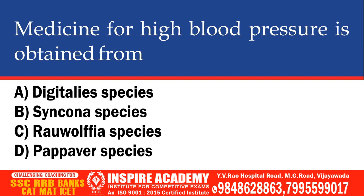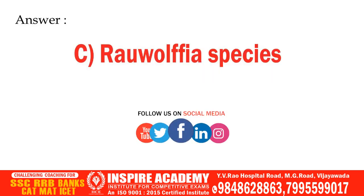Medicine for high blood pressure is obtained from which plant species? Options: Digitalis species, Cinchona species, Rauwolfia species, Papaver species. The correct option is Rauwolfia species.